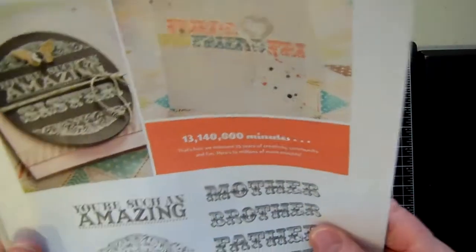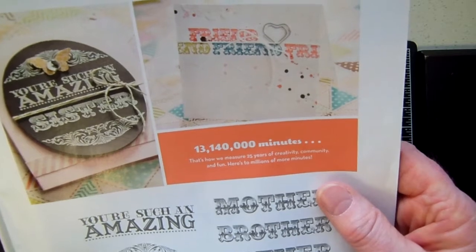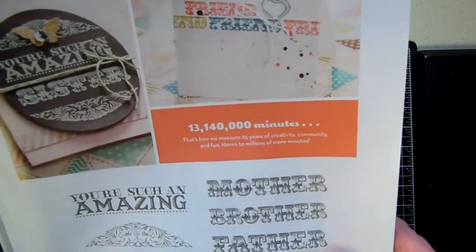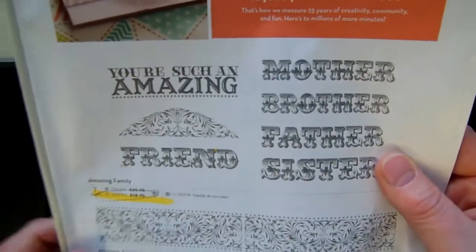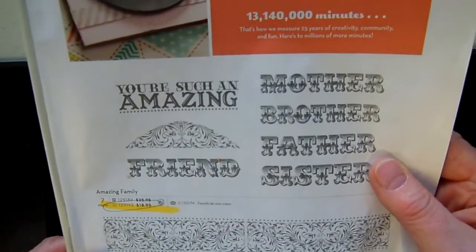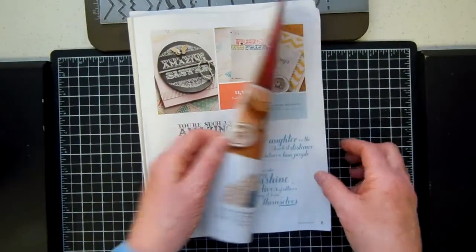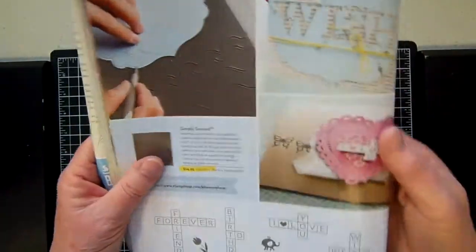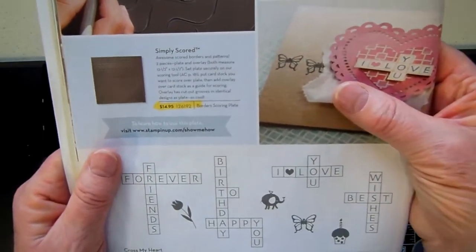And the reason I chose to do that card is because of the dry embossing, which is going to allow me to go ahead and use the new score plate that's also in this book. The friends up here is from this amazing family set. And let me show you the score plate on page 26 or 27, right here. Here it is. It is Borders Scoring Plate.